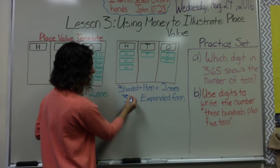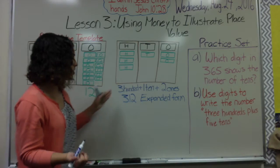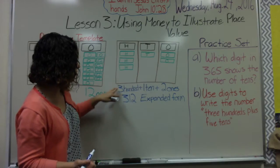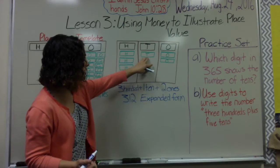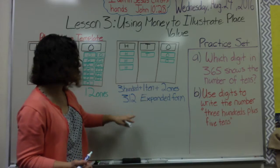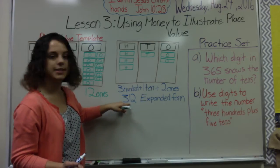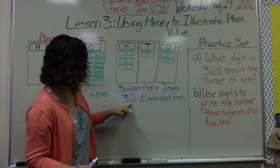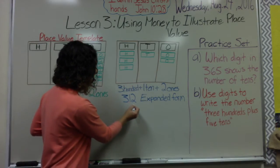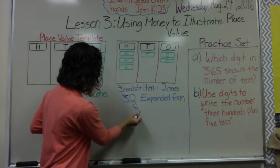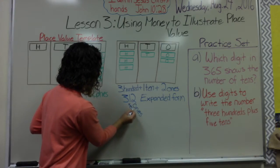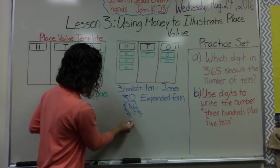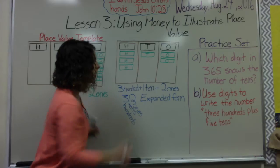Three hundred plus one ten plus two ones is the expanded form for writing three hundred twelve. I simply break apart: how many hundreds do I have? Three — so three hundred. I have one ten, so I write one ten. And I have two ones, so two one-dollar bills. This is my ones place, this is my tens place, and this is my hundreds place.